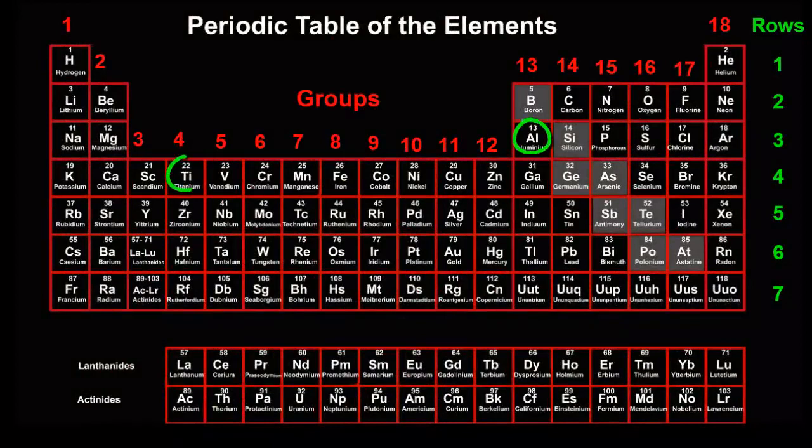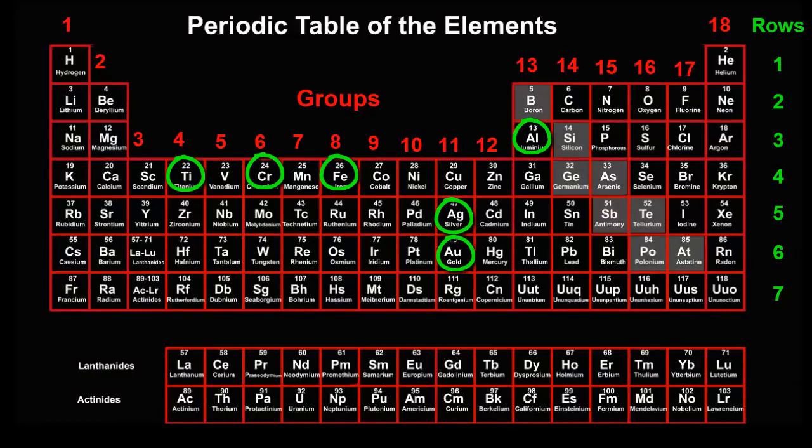We looked at aluminum, titanium, chromium, iron, silver and gold, all to the left of the diagonal, and saw that they all have metallic properties.